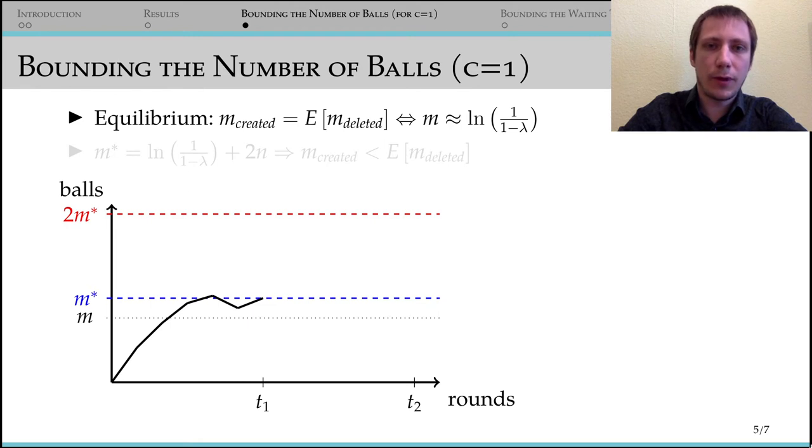Now assume that the current number of balls exceeds this value by 2n. Then we likely delete more than lambda n balls in the next round. This bias is sufficient to prove the following.